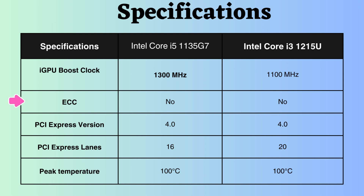Neither of these processors supports ECC, making them less suitable for critical systems. Both of these processors only support PCI version 4, and the number of PCI devices supported is higher for the Intel Core i5-1215U.